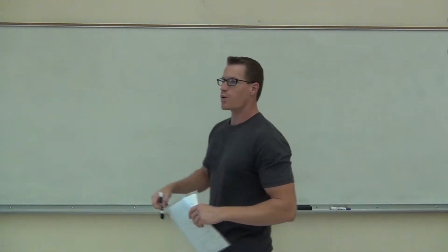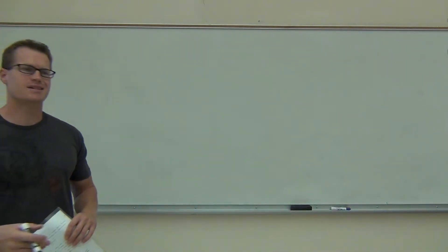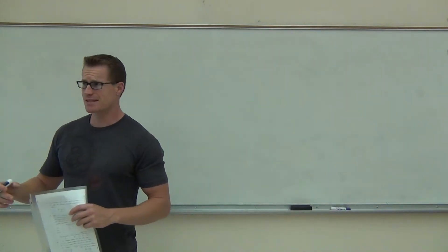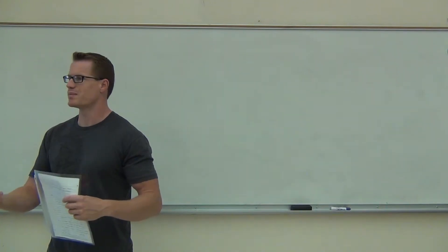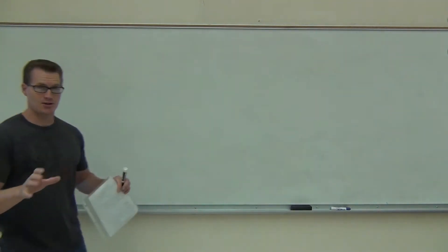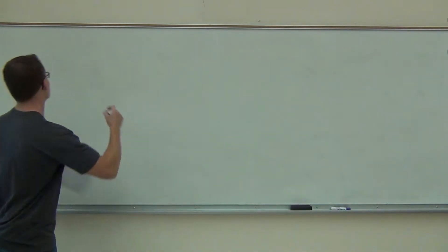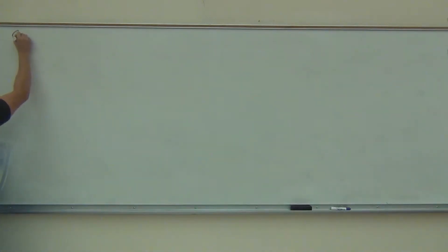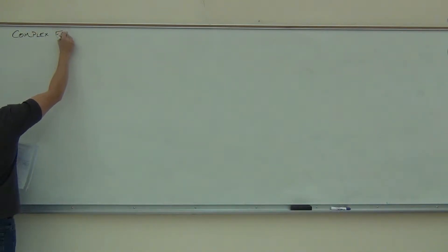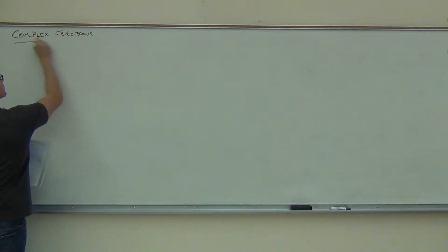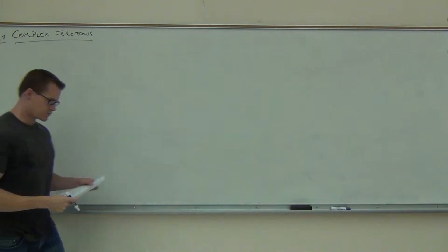Let's get started on 7.7. What we're going to be talking about in this section is something called complex fractions. Complex doesn't necessarily mean hard fractions. What it means is fractions within fractions — that's what makes it complex. It's going to look complex, but if you follow this one thing, it's not going to be that bad.